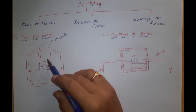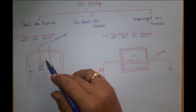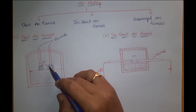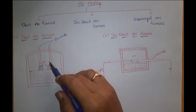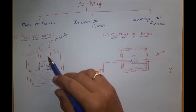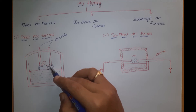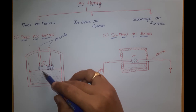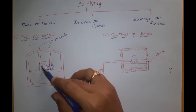The high voltage required for striking an arc can be obtained by using a step-up transformer which is to be fed from a variable AC supply. So in this scheme of arc heating, we supply very high voltage to obtain high temperatures. The medium between the electrode and the charge must be getting ionized.